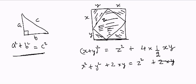So the 2XY terms cancel out from both sides, giving you X square plus Y square equals Z square. That is your Pythagorean theorem.